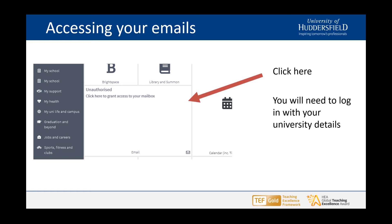To access your university emails you can log onto MyHUD and then click on the email box underneath the Brightspace button as shown here. Once you have signed in with your university login details you should be able to see your emails, but you may have to click to grant access to your mailbox the first time.